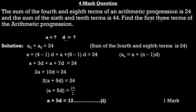The first condition states: the sum of the fourth and eighth terms of the AP is 24. The fourth term is a₄ and the eighth term is a₈, and their sum is 24. We write this as a₄ + a₈ = 24.